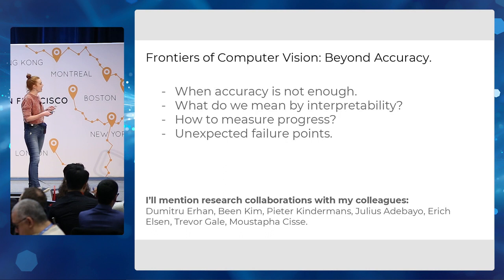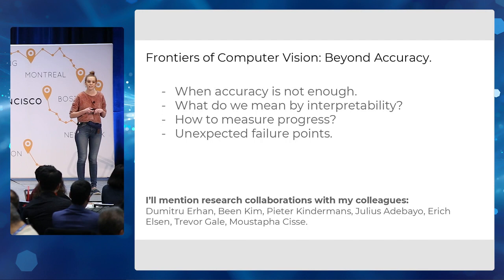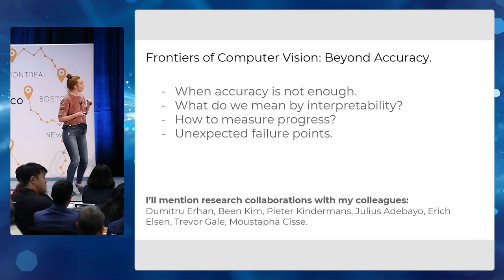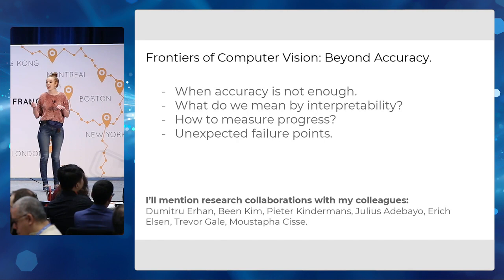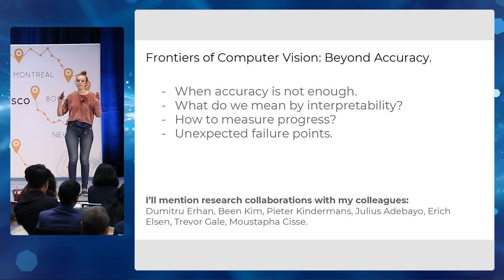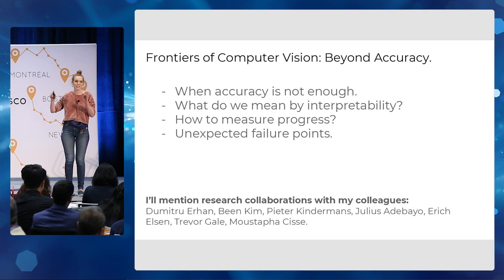Now put your hand up if you are certain that your definition of what an interpretable model looks like is the same as your neighbor's. It's tricky, and that's really what we're going to get into today. I'm going to motivate some examples by anchoring to computer vision, both because this is the first breakthrough in deep neural networks that has translated to wide deployment, and because a lot of research on incorporating these other desirable properties has centered on computer vision.